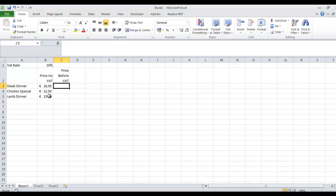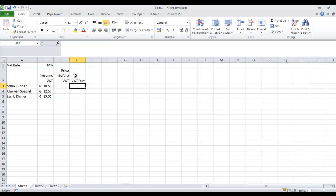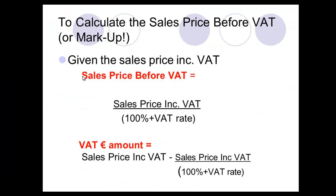Price including VAT is what the customer is going to pay you. Price before VAT is what you'll be able to keep yourself. And then VAT due is what you're going to have to pay the VAT man. So to work out the price before VAT: if you have the sales price including VAT, you divide it by 100% plus the VAT rate. So if your VAT rate was 10%, you're dividing by 110% — 100% plus 10% equals 110%.